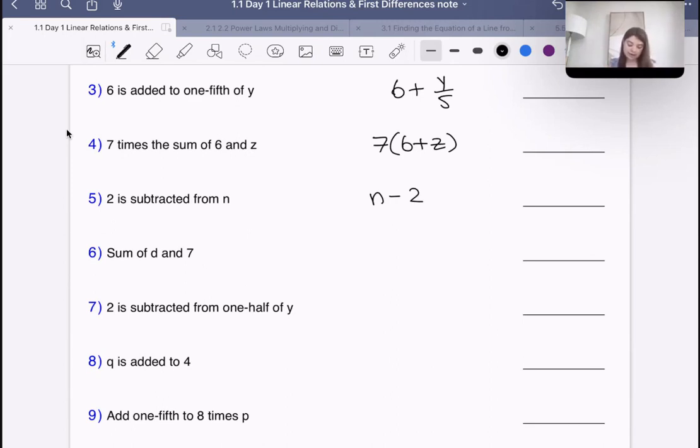Number six says the sum of d and seven. That one's easy. We just put d plus seven.